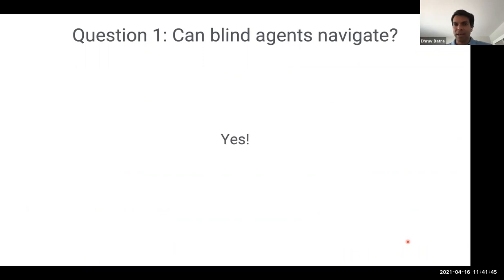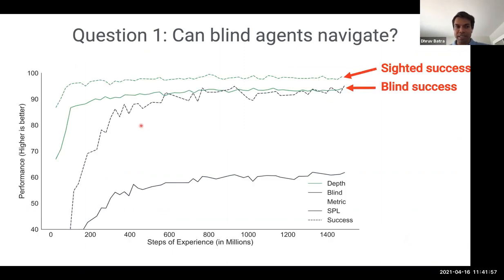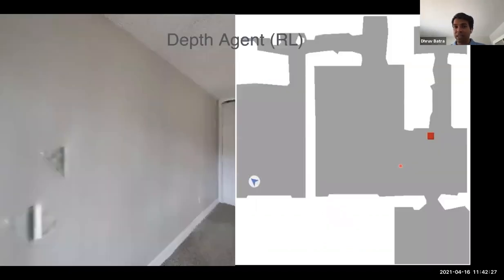There's no mapping supervision. There's no spatial memory. There's no auxiliary tasks. So if maps emerge in such an extreme scenario, it tells us something about maps. So let's start with the first question. Can blind agents navigate? Is that even possible? And the answer right off the bat is yes, they can navigate actually very well, just not very efficiently. They are very effective. They're just not very efficient. And so this is a plot where on the x-axis is again, steps of experience. This is going on to just 1.5 billion steps of experience. The dotted line are sighted agents and the solid line are the blind agents. The green is success and the blue or black is path efficiency or SPL.